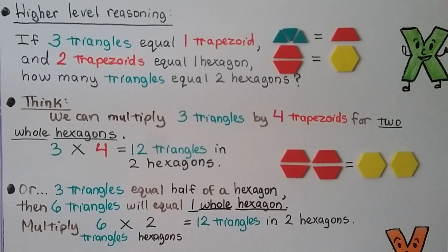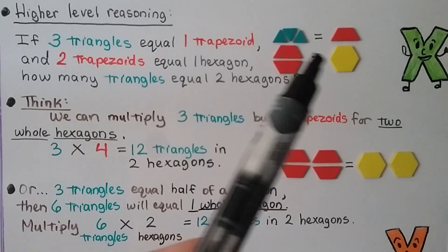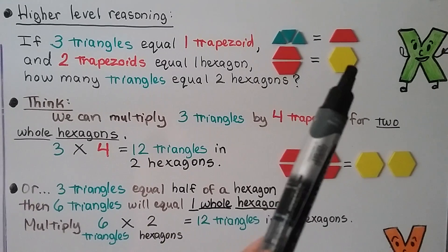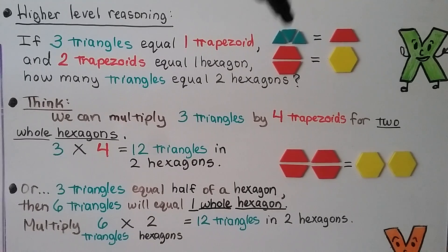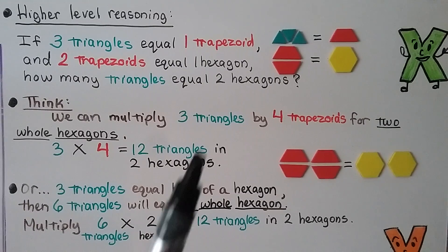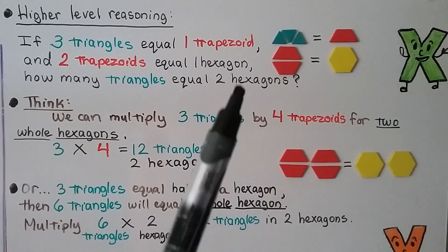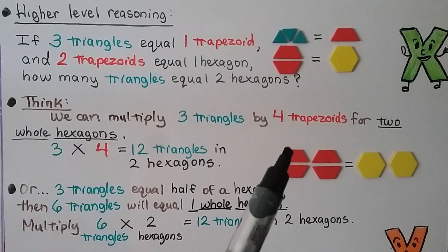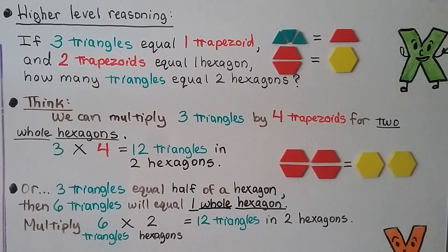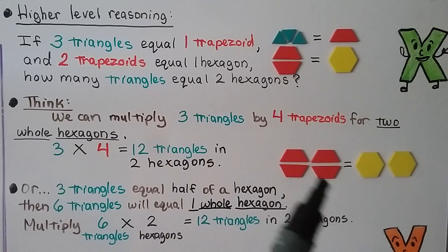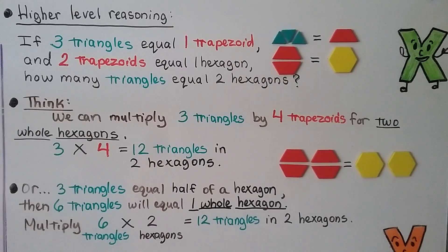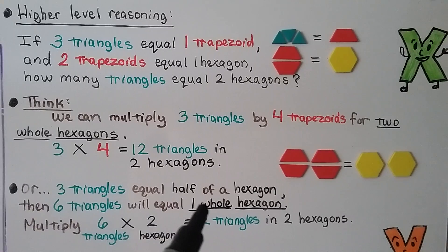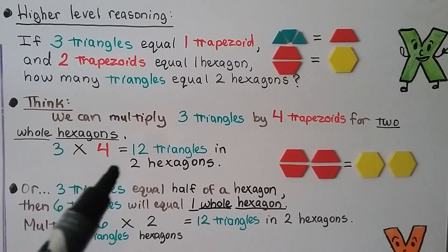Let's try some higher-level reasoning. If three triangles equal one trapezoid and two trapezoids equal one hexagon, how many triangles will equal two hexagons? We need four trapezoids for two hexagons, and each trapezoid has three triangles, so three times four equals twelve triangles. Alternatively, three triangles equals half a hexagon because one trapezoid is half a hexagon, so six triangles equal one whole hexagon. To get two hexagons, multiply six by two — that's twelve triangles. Same answer: twelve triangles. There are usually different ways to solve one problem.